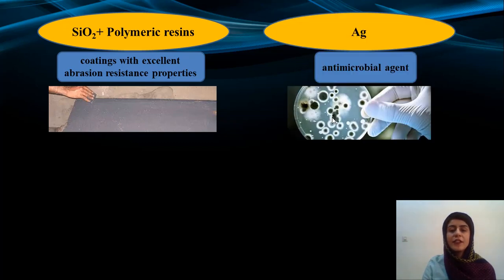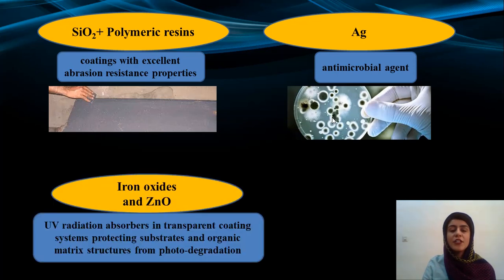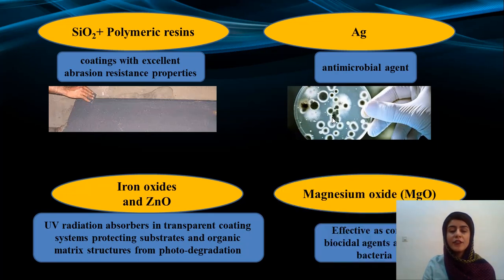Silver engineered nanoparticles are used to produce antimicrobial agents, and iron oxide and zinc oxide are used to produce UV radiation absorbers in transparent coating systems, protecting substrate and organic matrix structures from photodegradation. Magnesium oxide is effectively used as a contact biocidal agent against bacteria.